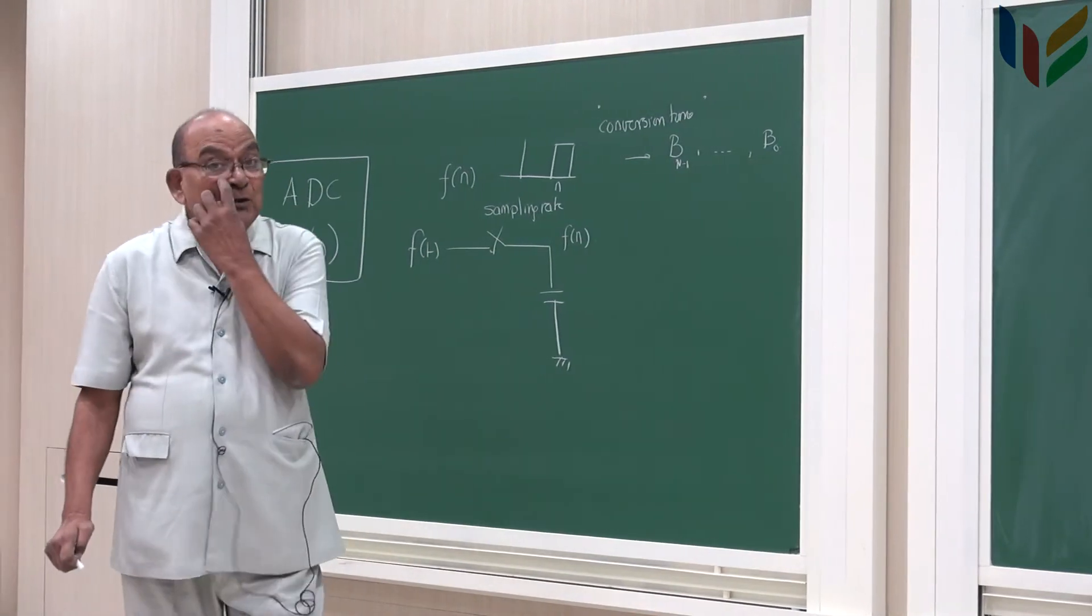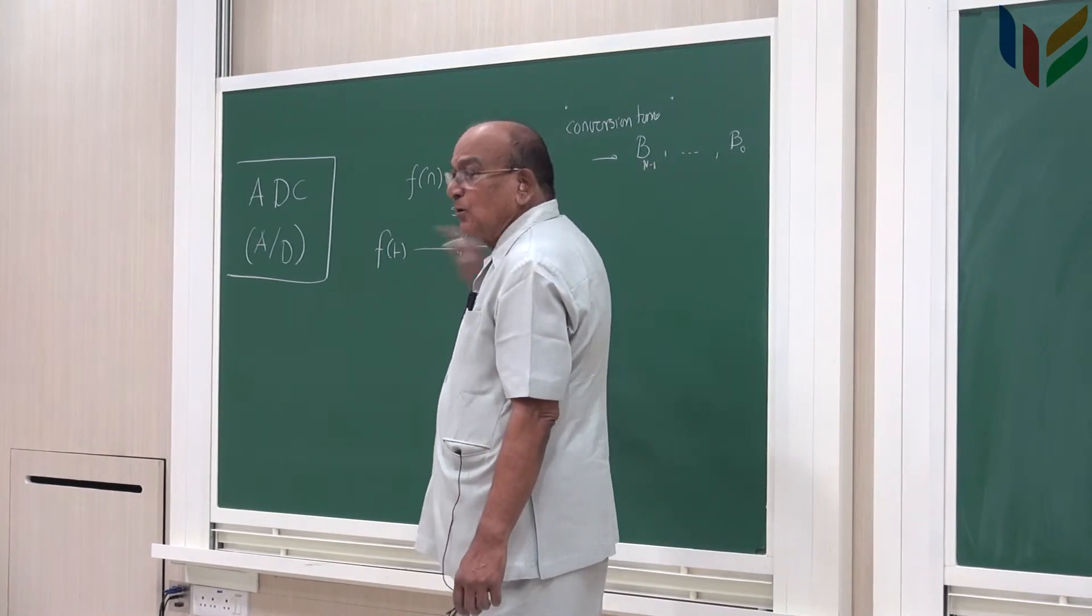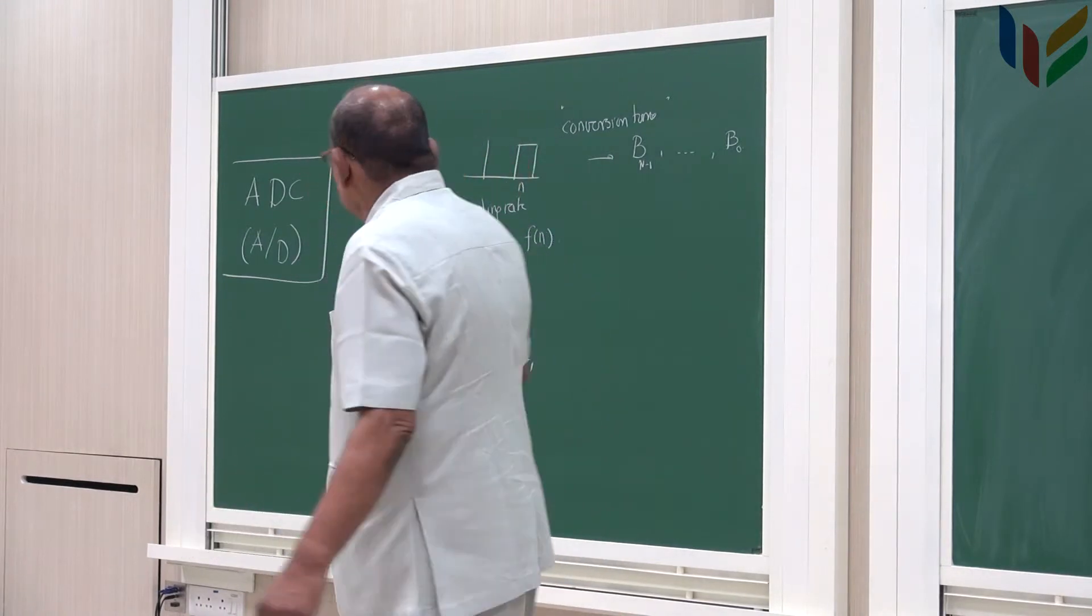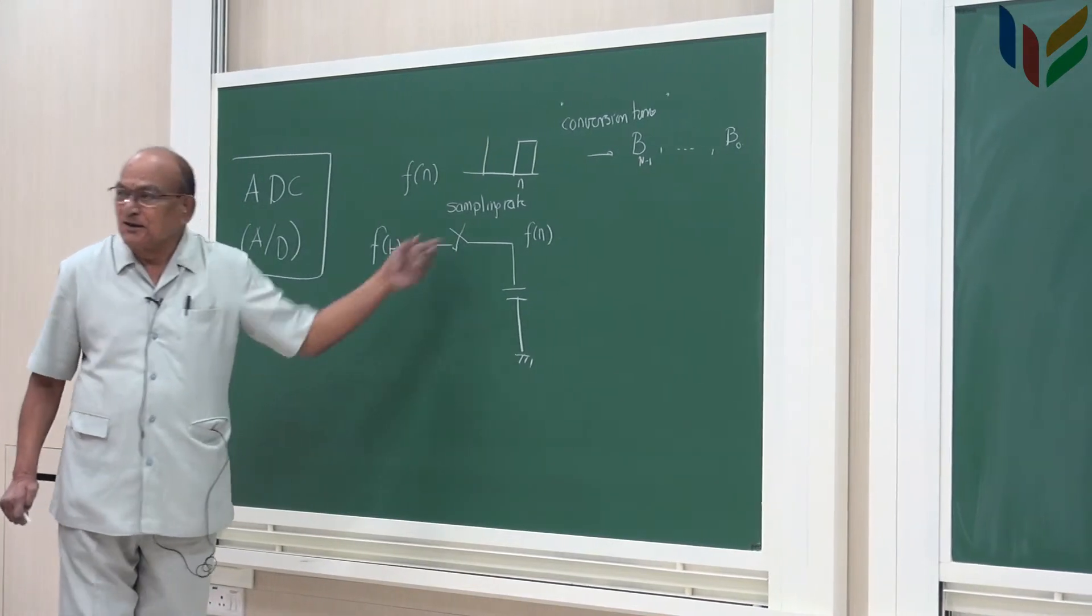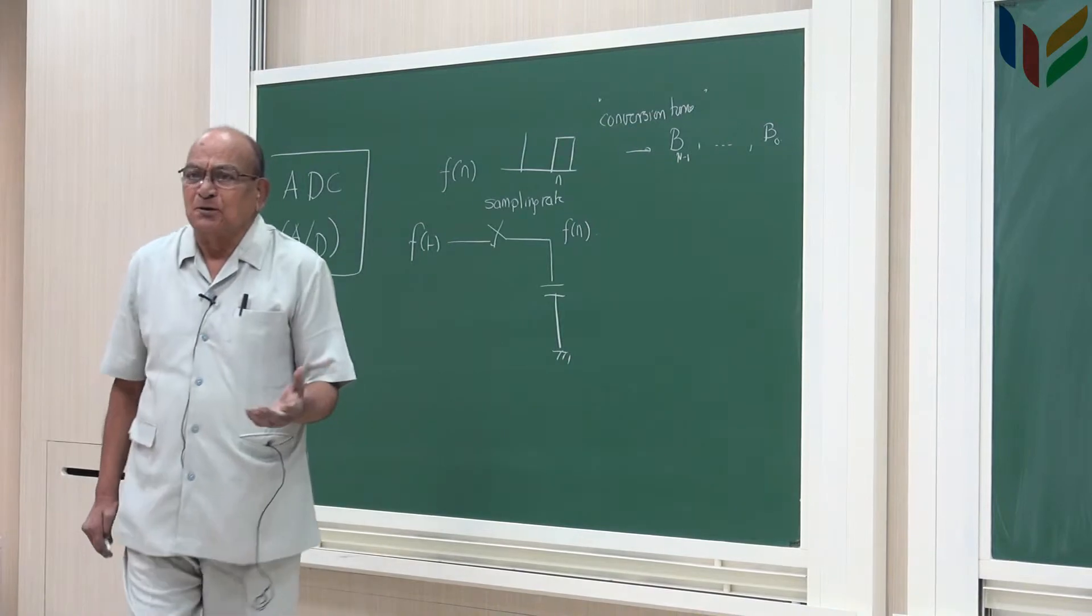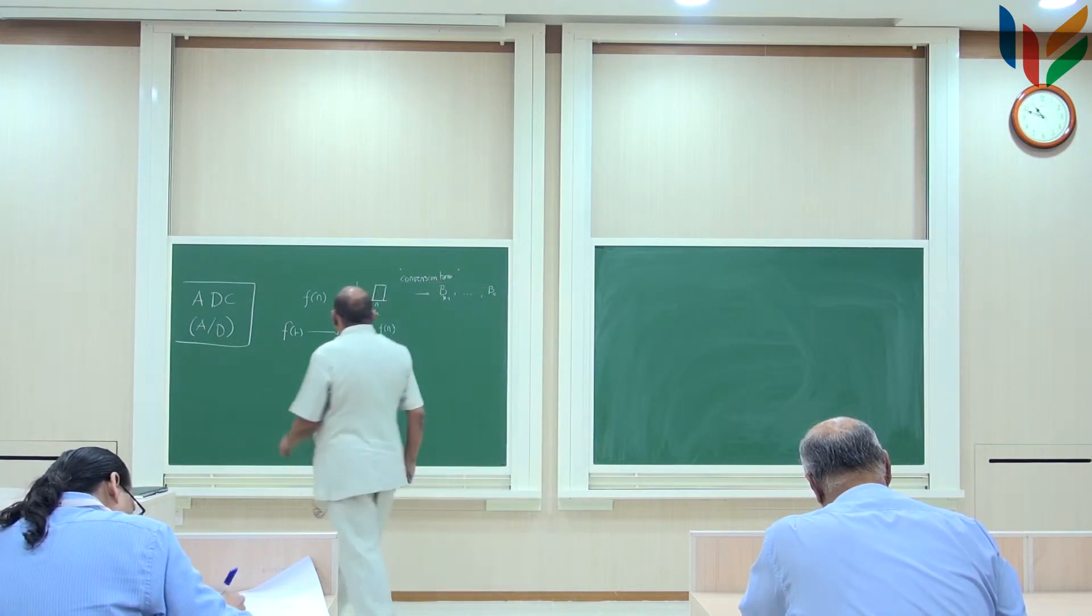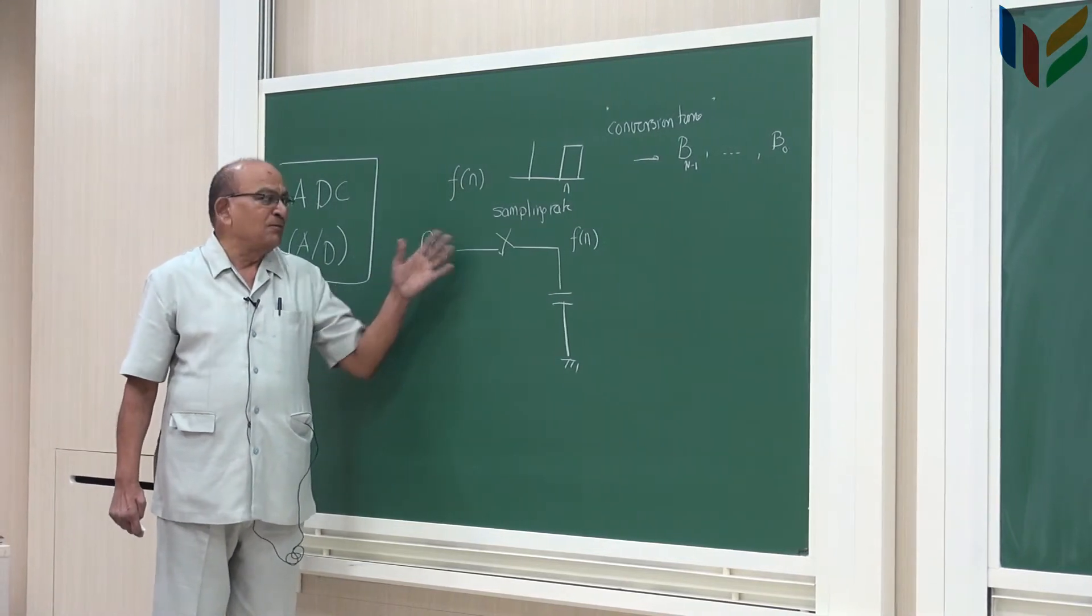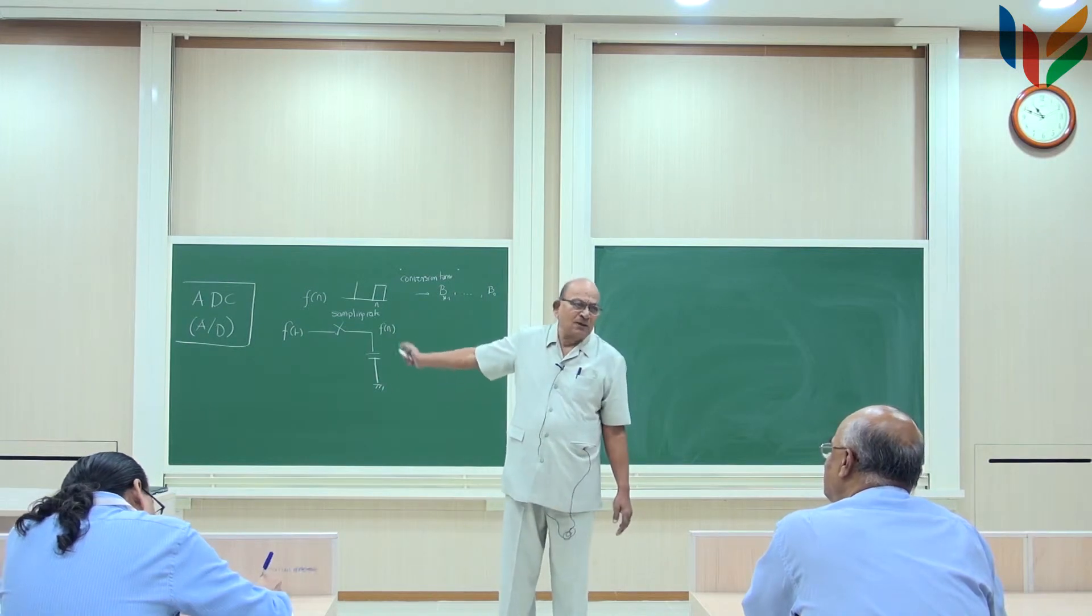When the switch is closed, the capacitor gets charged very quickly and the voltage across the capacitor is equal to f of n. The time constant of the charging will be equal to the resistance in the circuit multiplied by the value of the capacitance. This should happen very fast because the sampling interval here is short, within the time the charging must take place. Now you can see the relationship between the width of this pulse and the time constant of the sampling circuit. The resistance in the circuit includes resistance of the switch. The time constant of the charging depends upon the product of the capacitance and the resistance in the circuit. The resistance in the circuit includes the resistance of the switch when it is closed. This time constant must be much smaller than the duration of the sampling pulse. This is one requirement.